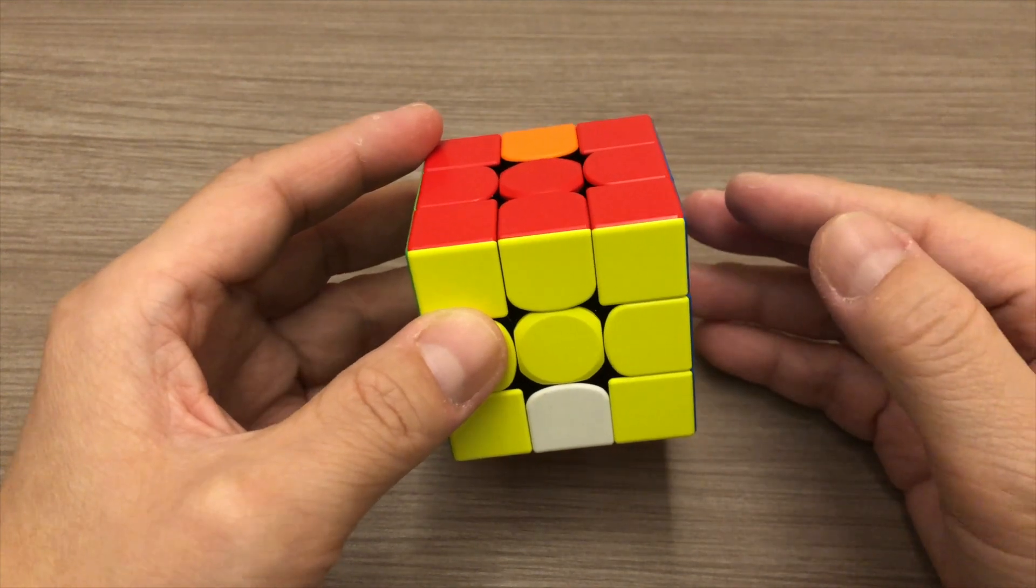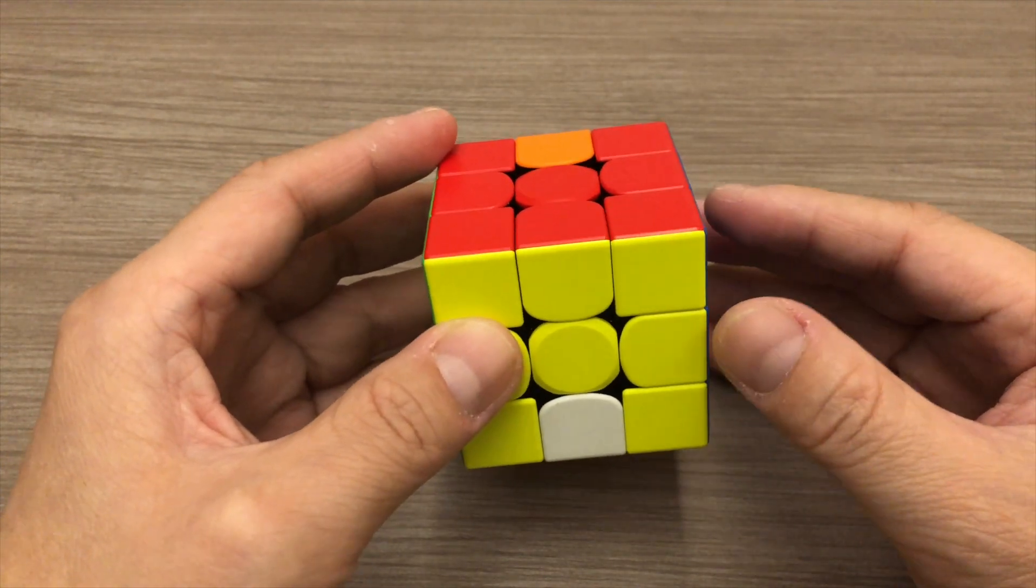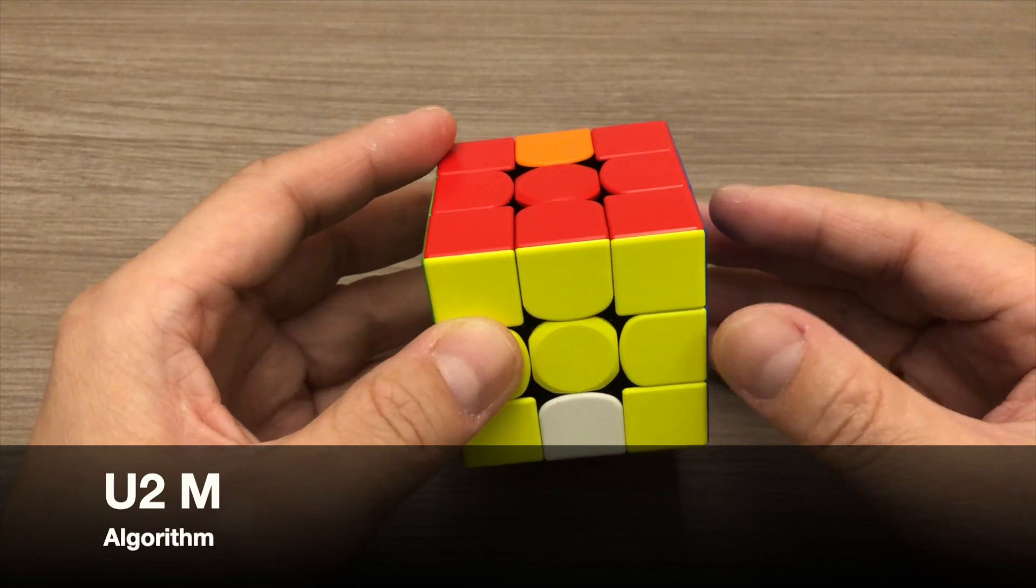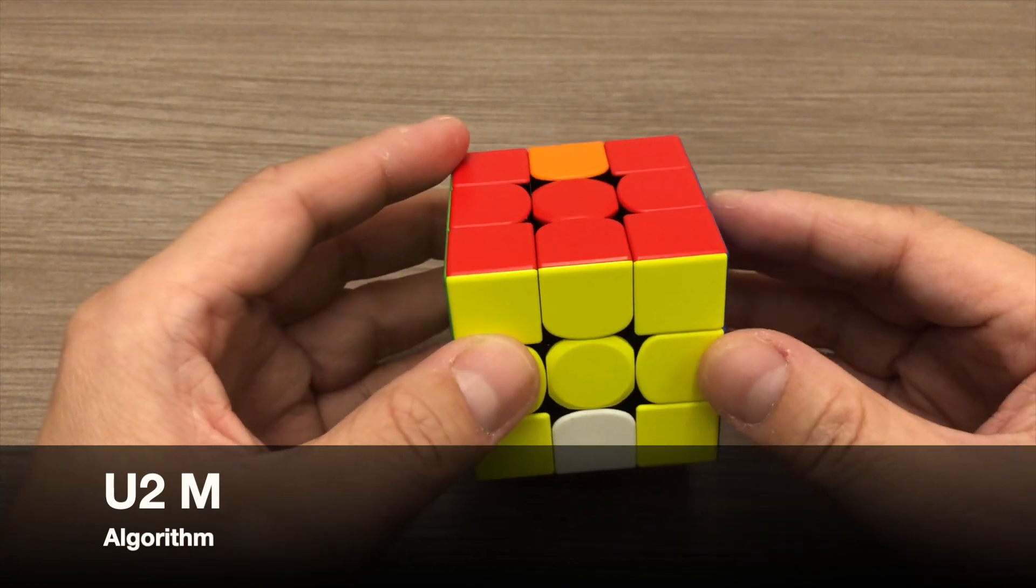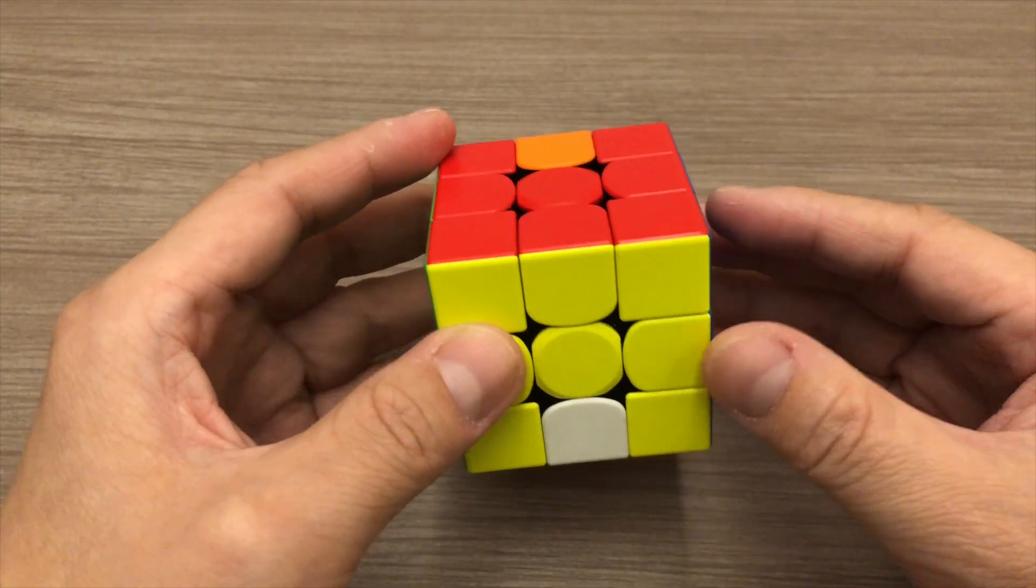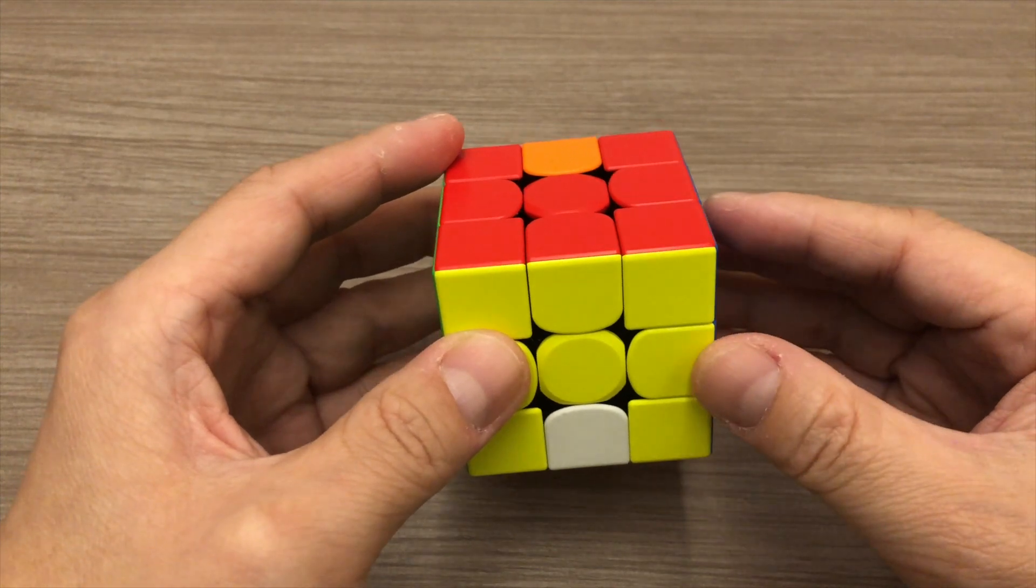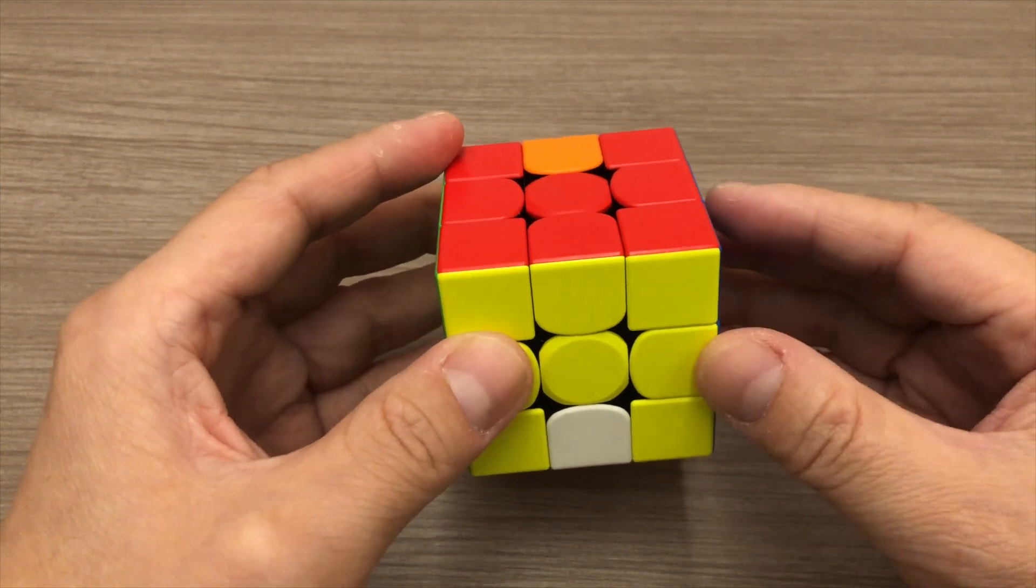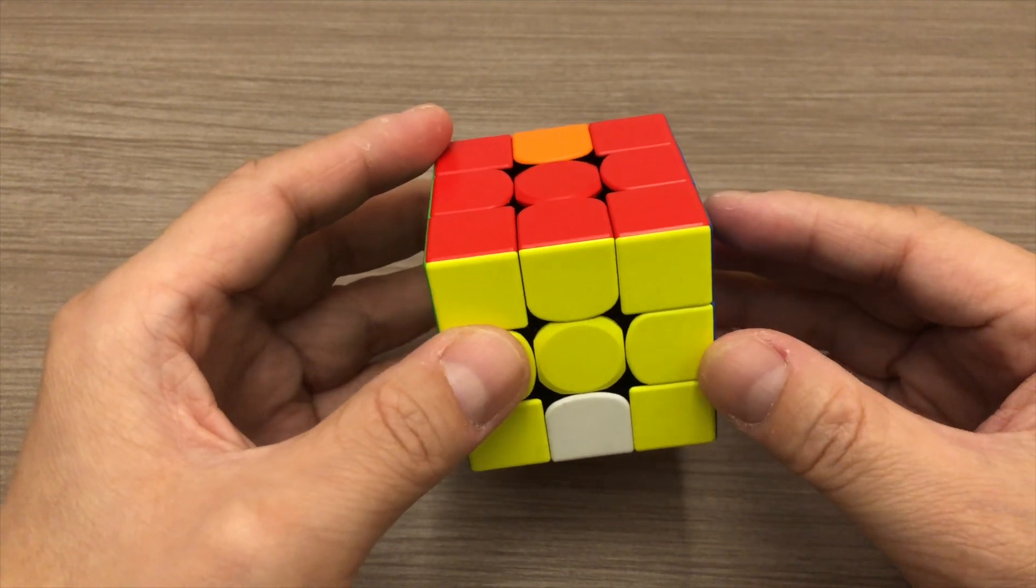If your cube does not fit into any of the three patterns, then you can apply the U2, M algorithm repeatedly so that one of the patterns may appear and then you can solve it with the right algorithm for that pattern. Let's try this example.